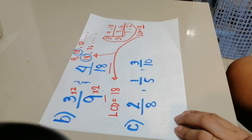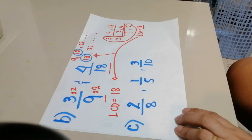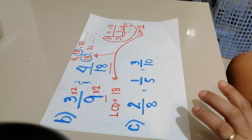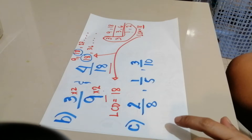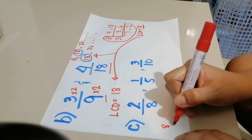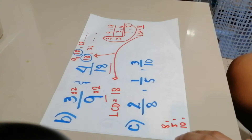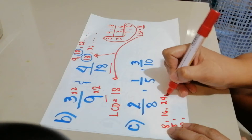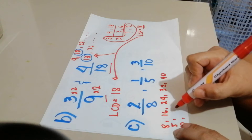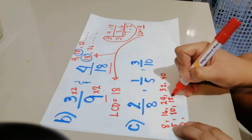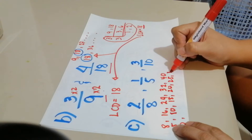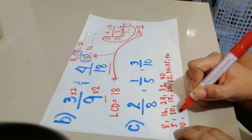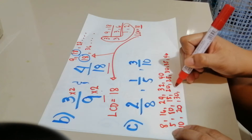What if you have three fractions with different denominators? Here, we have denominators 8, 5, and 10. I suggest using listing. Skip counting by 8: 8, 16, 24, 32, 40. For 5: 5, 10, 15, 20, 25, 30, 35, 40. For 10: 10, 20, 30, 40.